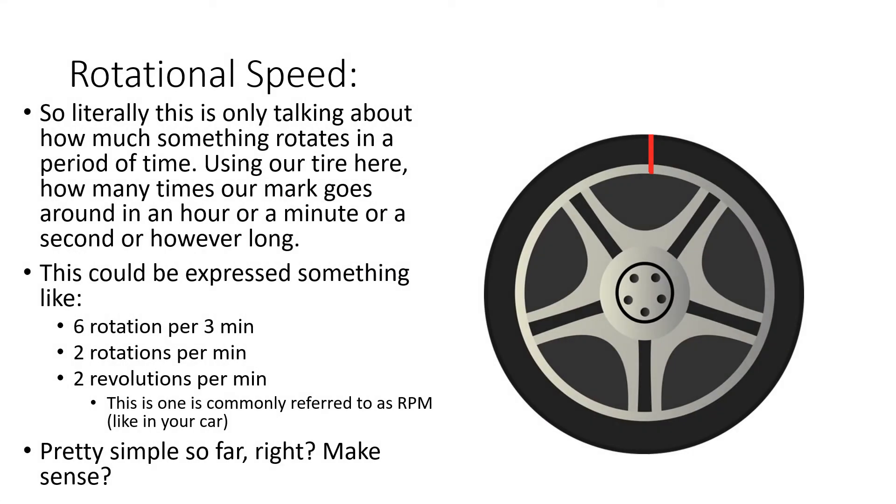Rotational speed. So literally this is only talking about how much something rotates in a period of time. Using our tire here, how many times our mark goes around in an hour or a minute or a second or however long. This could be expressed something like 6 rotations per 3 minutes.